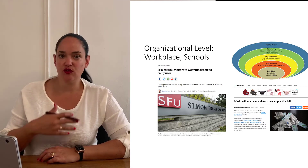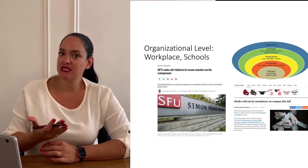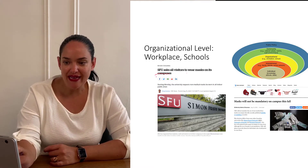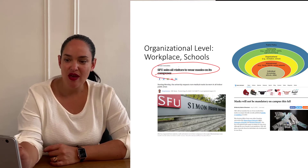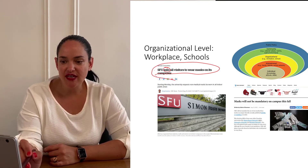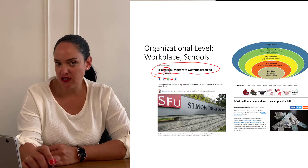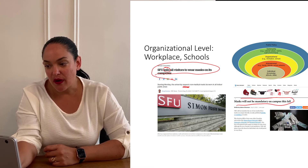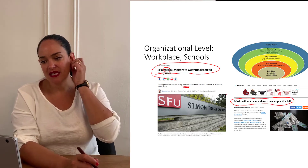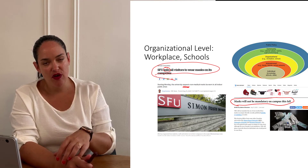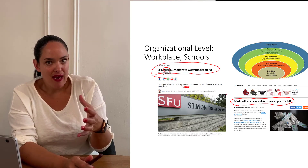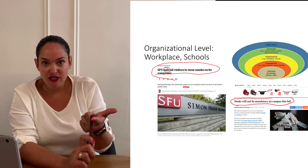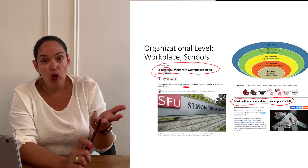At the organizational level, schools, workplaces, and similar institutions can make decisions that affect our behavior. For instance, SFU asks that all visitors wear masks — they're asking, not telling, and it's not mandatory. However, UBC says masks will not be mandatory on campus this fall. So we can educate people at the individual level, get friends and family to influence them, or create organizational environments where mask-wearing is mandatory.